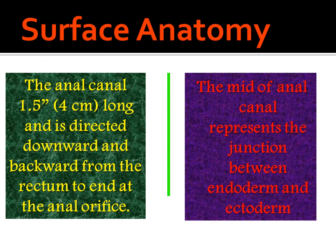Before knowing anorectal disorders, we need to understand the anatomy of the anal canal. The anal canal is 1.5 inches — that is 4 cm long — and runs directly downwards and backwards from the rectum to the end of the anal orifice.